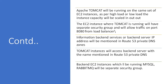The EC2 instances running Tomcat will have a separate security group allowing traffic only on port 8080 from the load balancer. Our application on Tomcat needs backend servers — MySQL, RabbitMQ, and Memcache. Information about backend services and their IP addresses will be mentioned in Route 53 private DNS zones. Tomcat instances will access backend servers by name, with private IP addresses mapped in Route 53. These backend EC2 instances running MySQL and RabbitMQ will be in a separate security group.